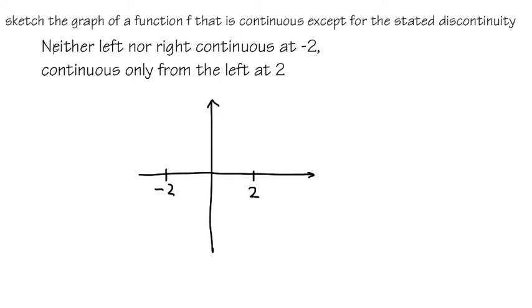And let's take care of the first situation. So this is just saying the graph is not continuous from the left and also from the right. So I can draw the graph like this, and then maybe like that.